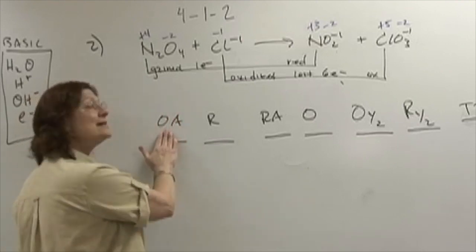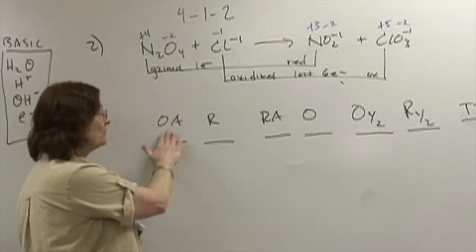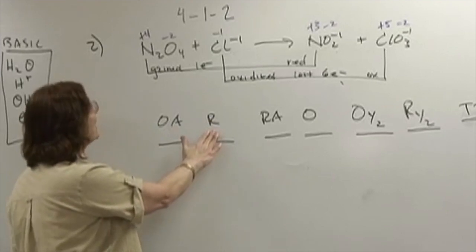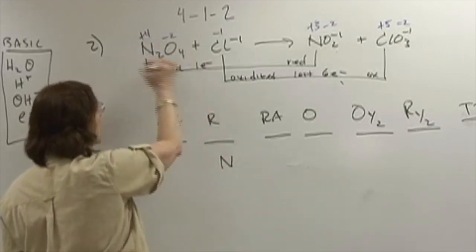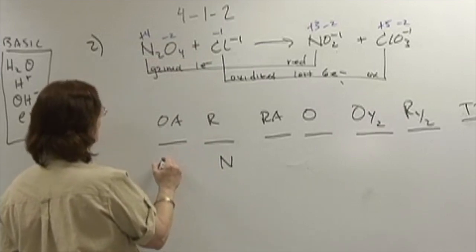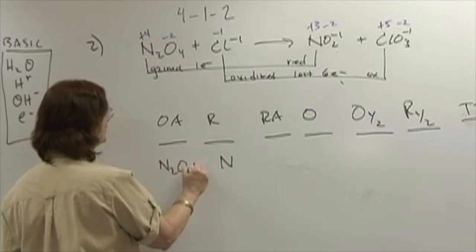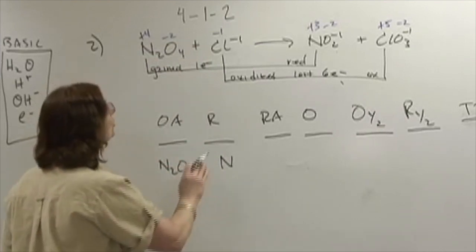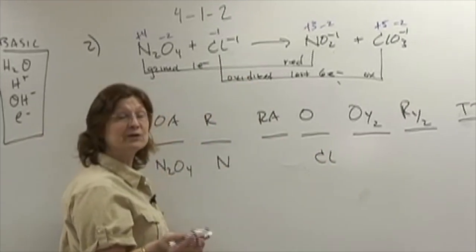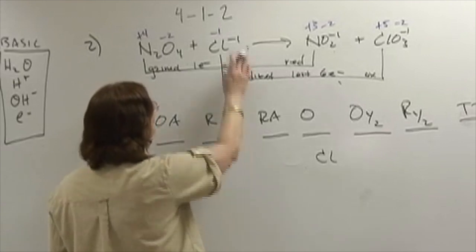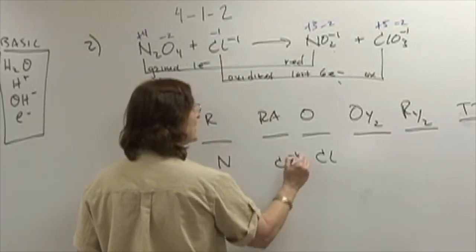The oxidizing agent contains the element reduced. The element that is reduced is nitrogen. The whole compound is the oxidizing agent. Chlorine is oxidized, and you can put Cl2 if you like. The reducing agent is the chloride ion.